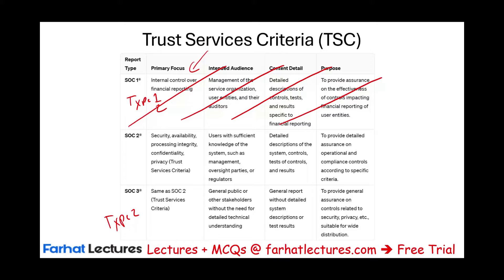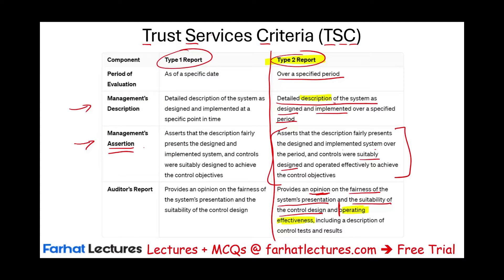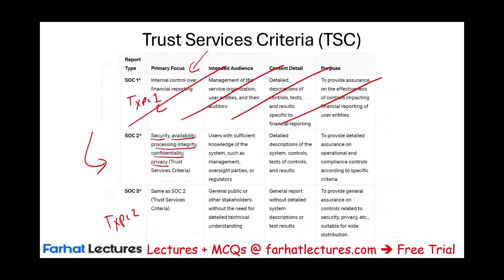When it comes to trust services criteria, we're talking about SOC 2. SOC 2's primary focus is security, availability, processing integrity, confidentiality, and privacy. Those are what we call the trust services criteria. When we audit, we issue a report, and the auditor's opinion is about the fairness of those criteria — system availability, processing integrity, confidentiality, privacy — the TSCs.